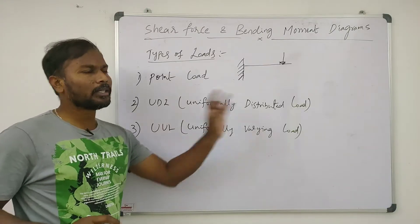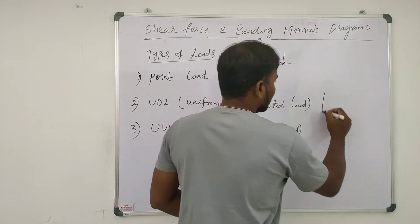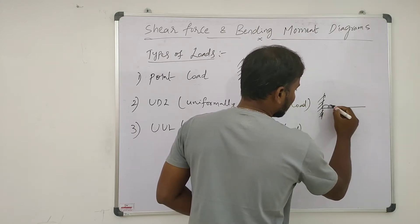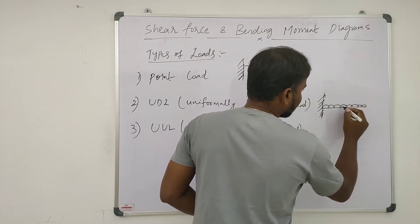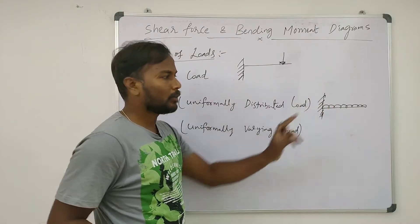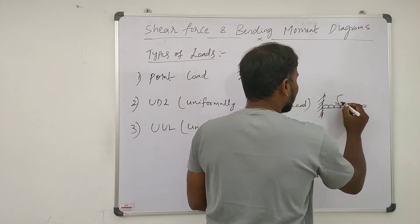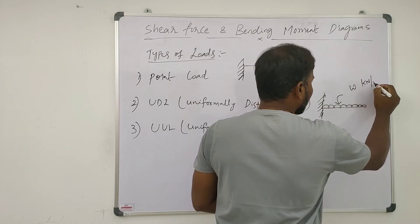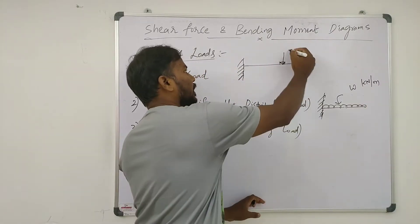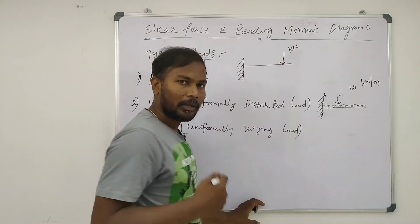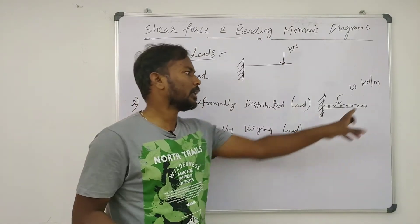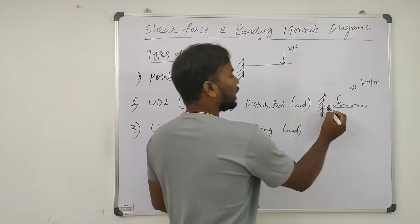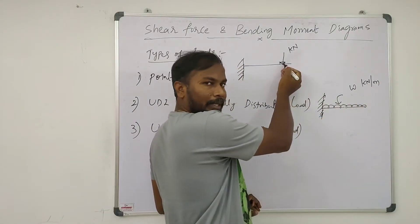Now uniformly distributed load. This is uniformly distributed load and it will be denoted as small w, in kilonewton per meter. Here the load is distributed along the beam, so they give it as kilonewton per meter.